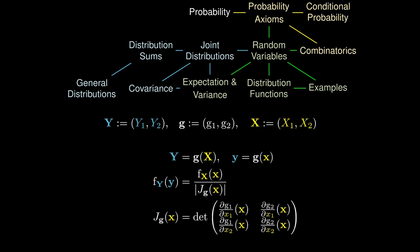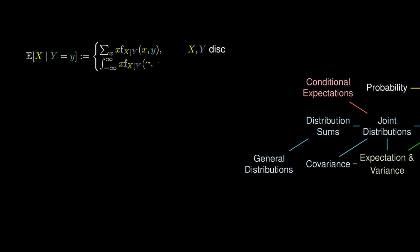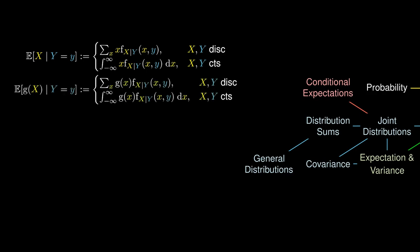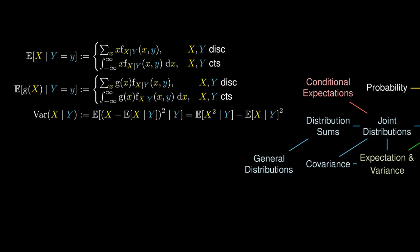If we have conditional probabilities, do we have conditional expectations? It turns out that if X and Y are either both discrete or both continuous, we can define conditional expectations in a straightforward manner. We can generalize this to the conditional expectation of g(X) given Y, and this helps us define the conditional variance of X given Y as the expected squared error from the conditional expectation, assuming the value of Y.